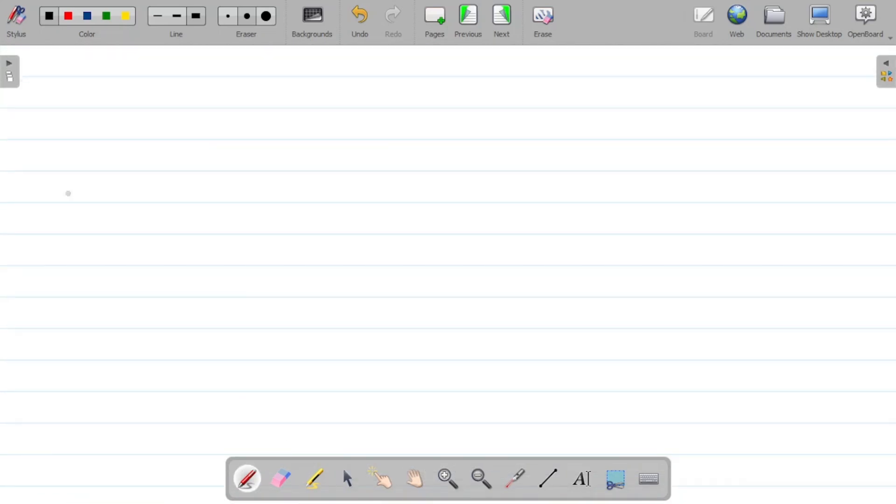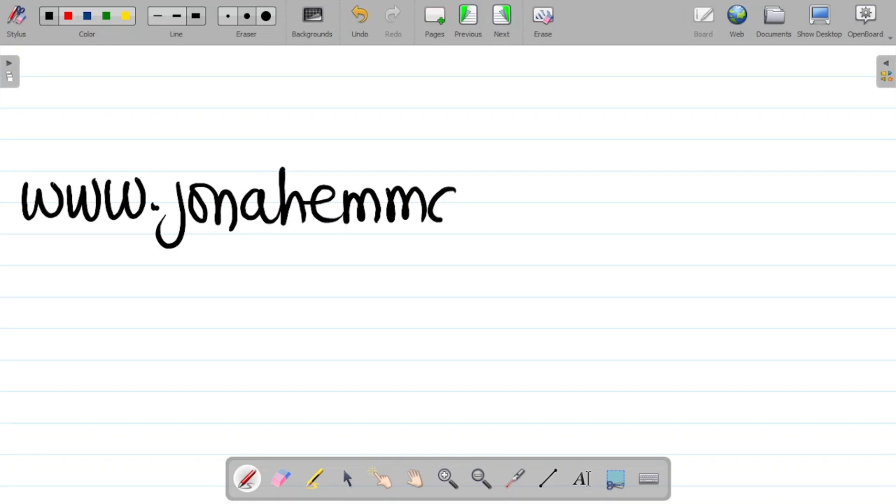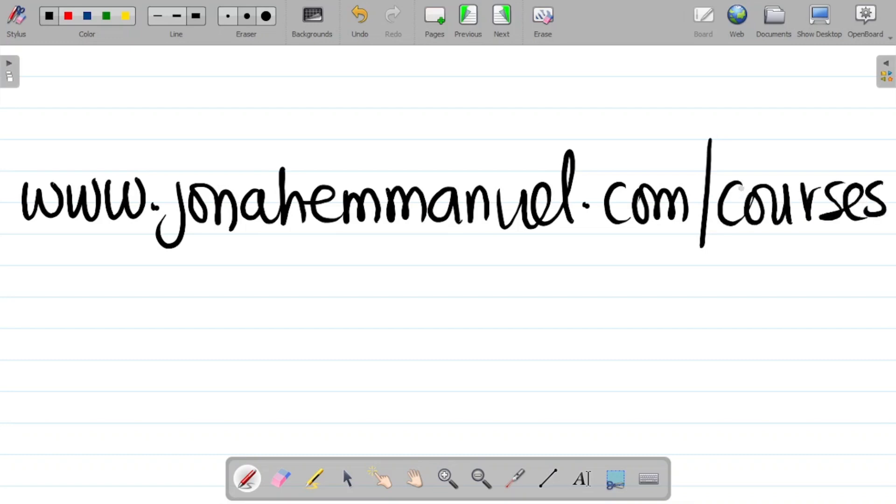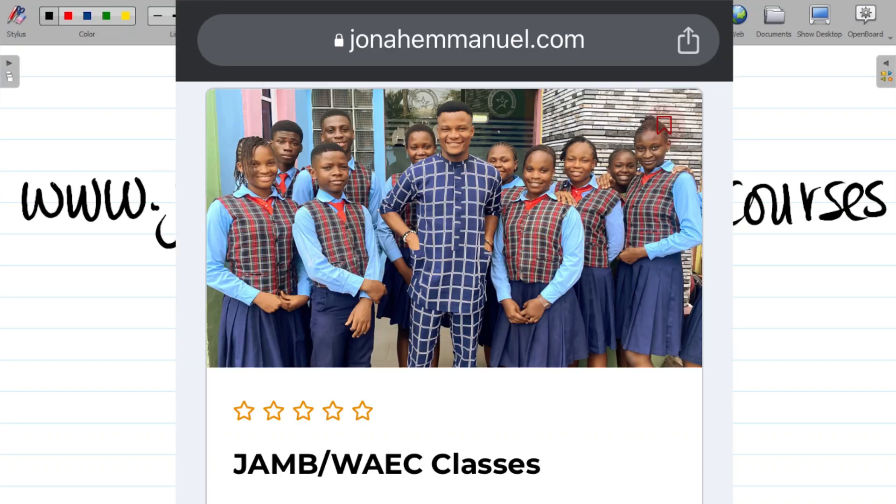I've prepared over 100 videos on physics, chemistry, mathematics. For each of these classes, I have discussed past questions for the last 10 years. To get access to these courses and past question revision, simply visit my website, www.jonaimari.com slash courses. And then you see the JAMB slash WAEC classes. You can add to cart and then get it. But don't forget you have to create an account to the website. So register an account to the website and you can now proceed to get the courses. It gives you a lifetime access to these courses.